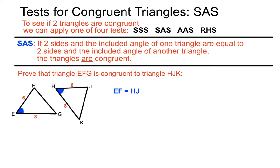Let's look at a side statement where one side from a triangle equals the other. EF is six and HJ is six, so we can say that they're equal to each other. That's given to us in the question — those sixes were provided for us. And that's our first side statement.